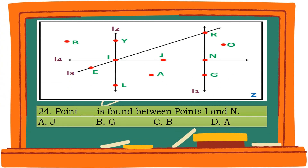Question 24. Point blank is found between points I and N. A. J. B. G. C. B. D. A. The correct answer is A. J.